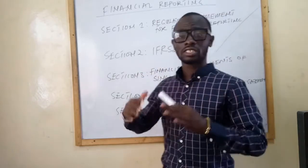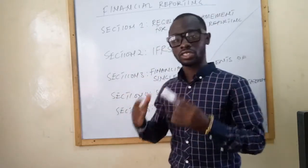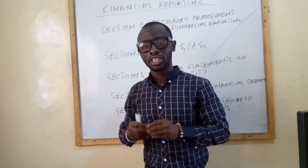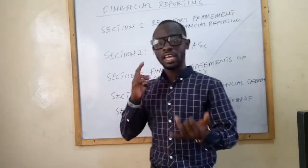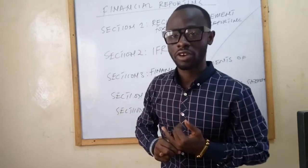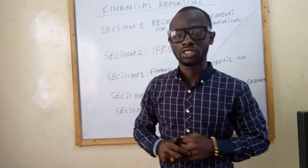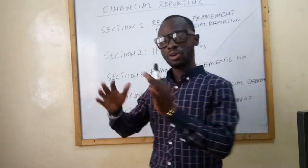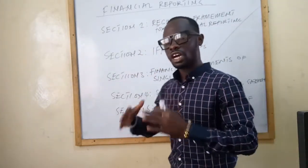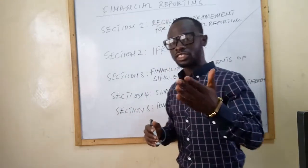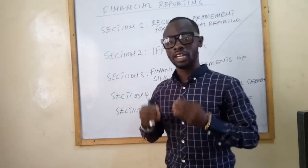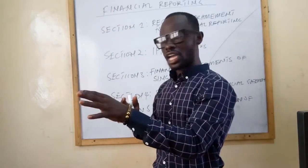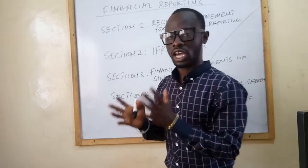Your ability to understand the standards will help you in the next section, Section 3, which covers the financial statements of a single entity — the income statement and other comprehensive income, the balance sheet, the statement of changes in equity, and the cash flow statement. After single entity statements, we move to Section 4, which covers consolidated financial statements of a simple group structure: a parent, a subsidiary, and an associate.